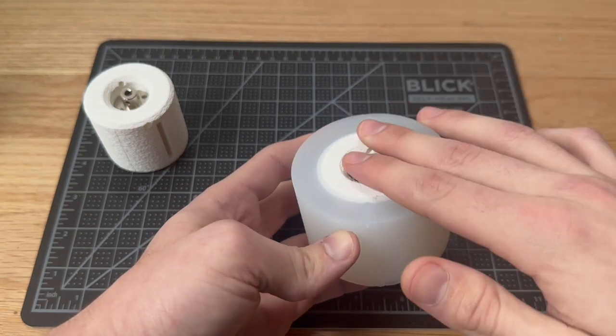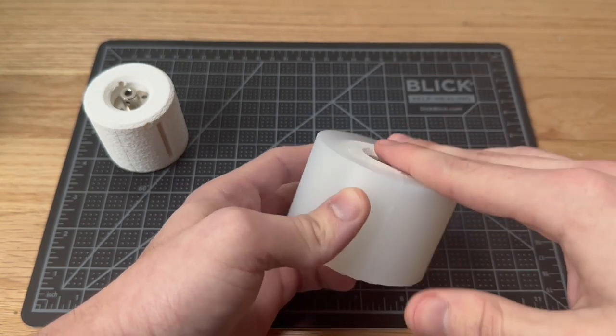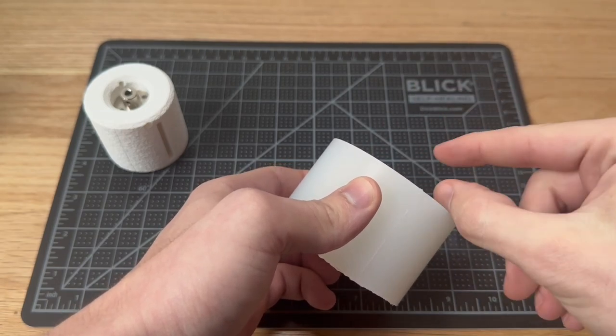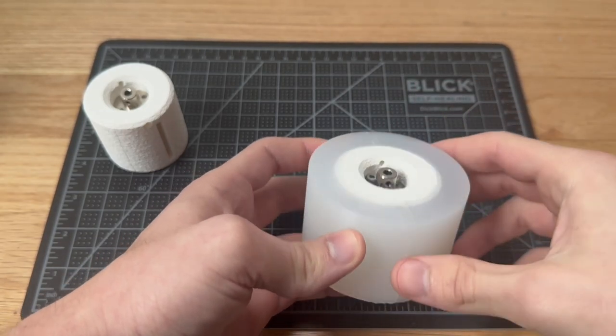So we're able to tighten this onto the motor without having to have the coupler external from the inside of the wheel, which is really cool.